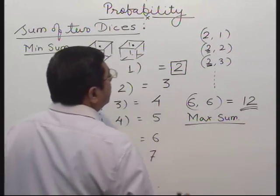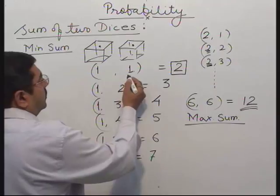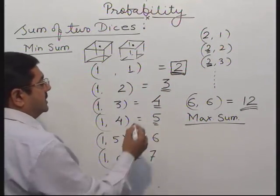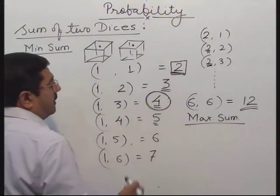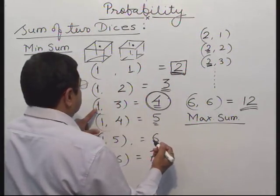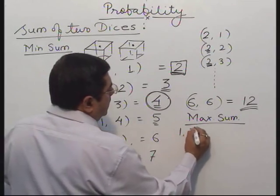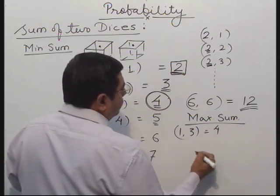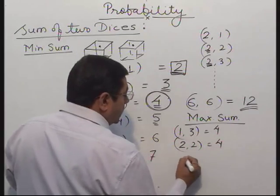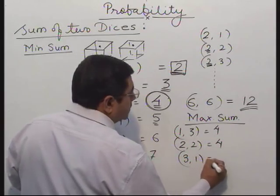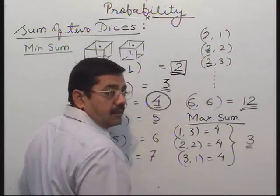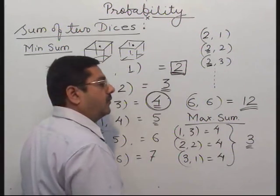Now, what is the probability of getting a sum of 2, 3, 4, 5, 6, 7? For example, what is the probability of getting sum 4? How many ways can we get 4? We have (1,3) — it gives me 4. (2,2) — it also gives me 4. (3,1) — it also gives me 4. So there are 3 cases of getting a sum of 4.